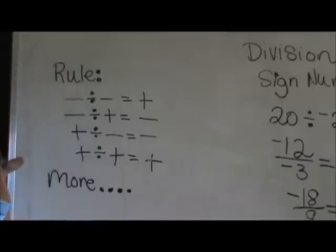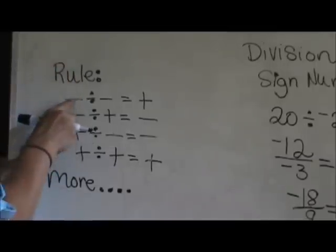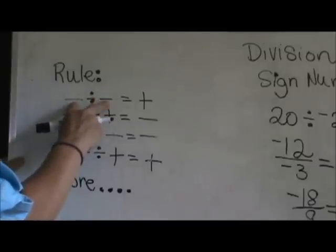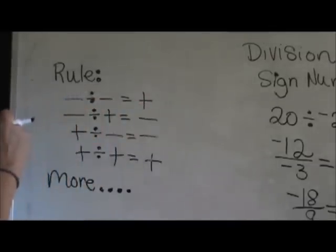The rules are just like multiplication rules. If you have a negative divided by a negative, those two are pairs and the answer is positive. Negatives always come in pairs.